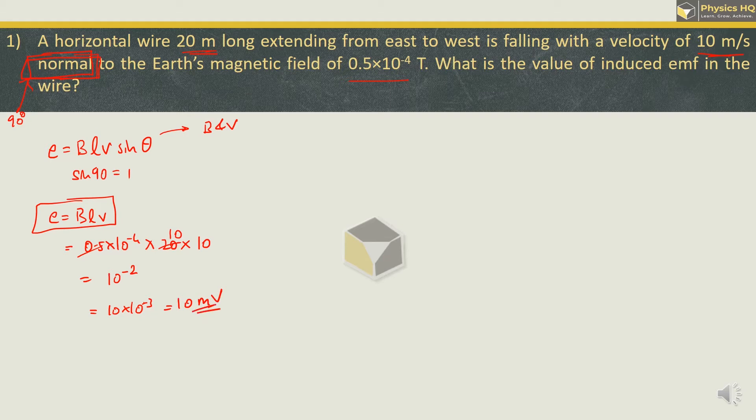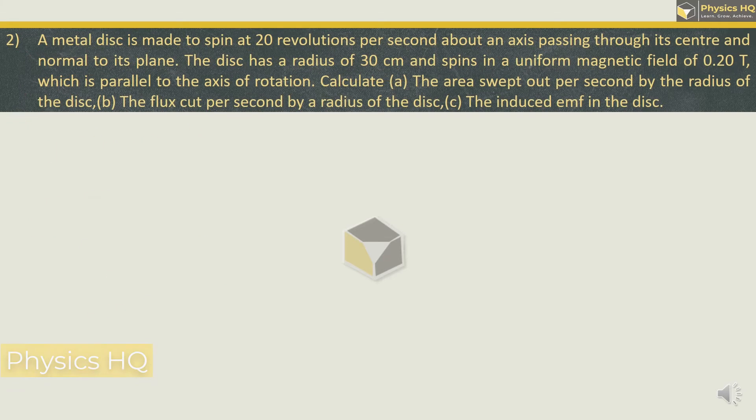Hope you all understood this. Let us check out the next problem. A metal disc is made to spin at 20 revolutions per second about an axis passing through its center. So if I consider a disc like this, there is an axis which is passing through its center and it is rotating along which is normal to its plane.